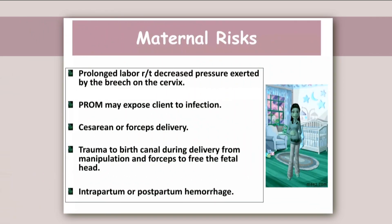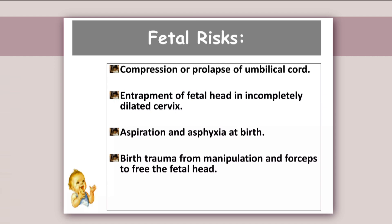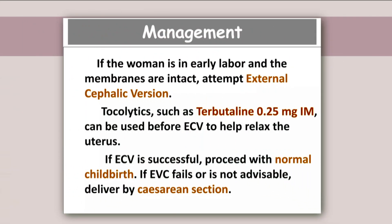Maternal risks due to breech presentation include: prolonged labor related to decreased pressure exerted by the breech on the cervix; premature rupture of membranes, which may expose the client to infection; cesarean or forceps delivery; trauma to the birth canal from manipulation and forceps to free the fetal head; and intrapartum or postpartum hemorrhage. Fetal risks include compression or prolapse of the umbilical cord, entrapment of the fetal head in an incompletely dilated cervix, aspiration and asphyxia at birth, and birth trauma from manipulation and forceps.